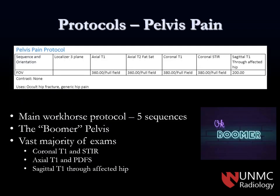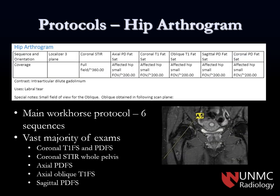Here's one of our main protocols - I like to call it the 'boomer pelvis' because it's the typical exam for an older patient with pain, looking for fractures. The main thing to know is that it's predominantly a larger field-of-view study with axial and coronal images - not trying to find tiny labral tears or subtle cartilage abnormalities, but looking for bigger-picture things like fractures and overall arthritis assessment.